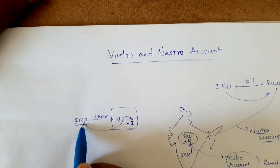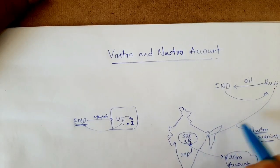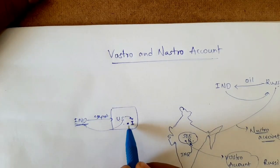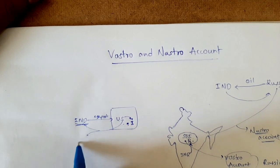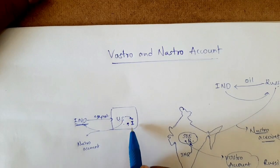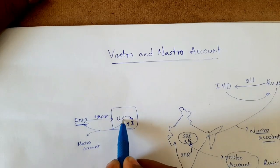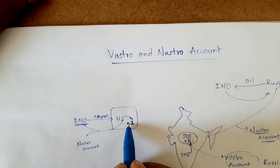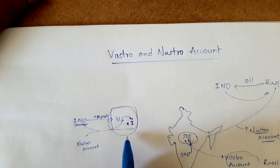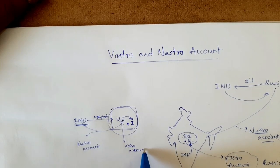For India, this account opened in the US — a foreign country — is a Nostro account, because it is India's own account held in a foreign country. For the US, since they have a foreign country's account in their territory, they call it a Vostro account. So the same account is called Nostro by the home country and Vostro by the host country.